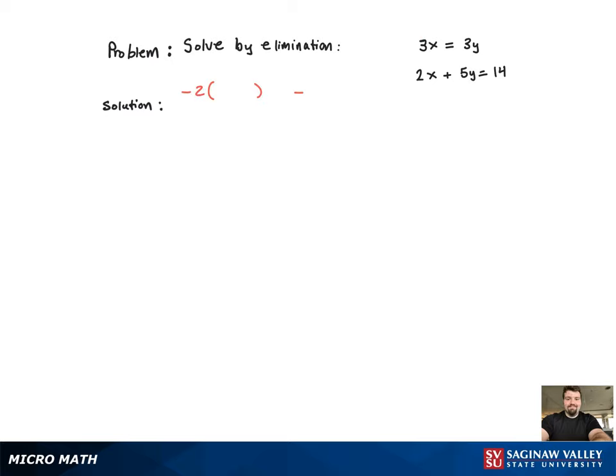Now I need to get those coefficients to be the same with an opposite sign. So, if I multiply the first equation by negative 2 and the second equation by 3, then I'll have negative and positive 6 for the coefficients of the x variables.